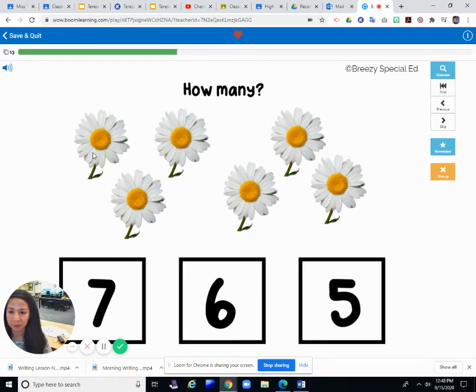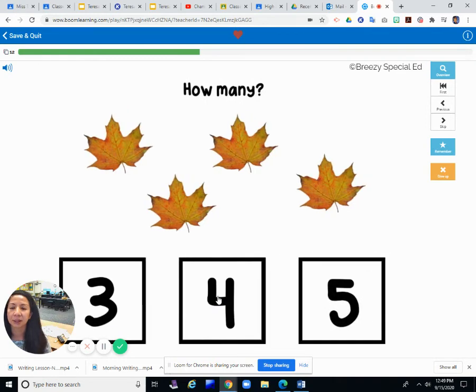We'll do a couple more. How many flowers? Daisies. How many daisies? One, two, three, four, five, six. There are six daisies. Seven, six, or five? Six.